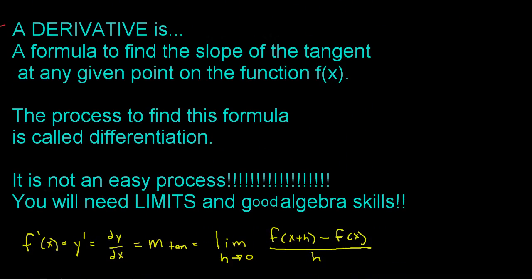A derivative is a formula to find the slope of the tangent line at any given point on the function f of x. The process of doing this is called differentiation, and it's not an easy process. There are actually multiple ways to do it, but the way I'm going to teach you in this video is to use limits. You're going to need limits and some good algebra skills.